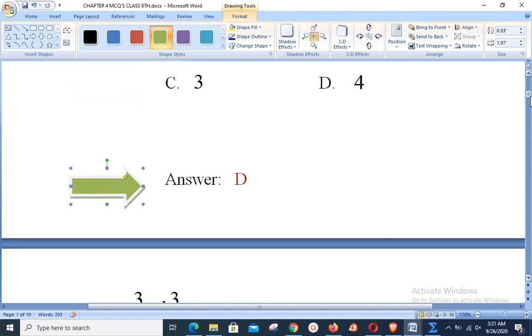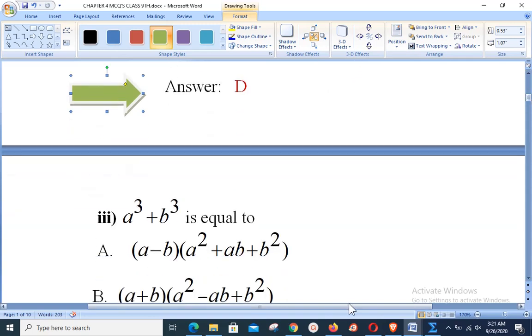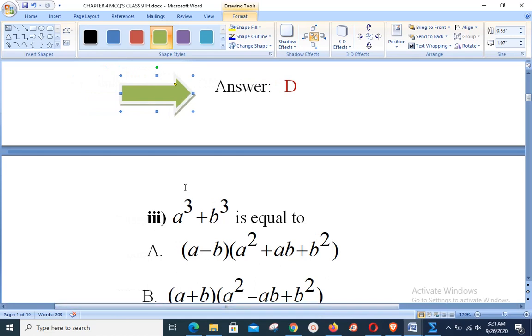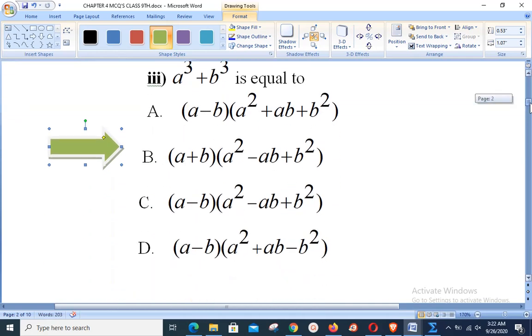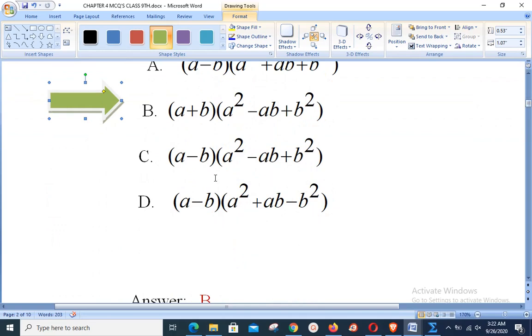We go ahead to the next objective, that is objective number 3. Basically it is a formula: a cube plus b cube is equal to. Now if you know all these kinds of formulas, you will be clearly knowing that this is equal to a plus b into a square minus ab plus b square, and that is option B. Simply if you know the formula.